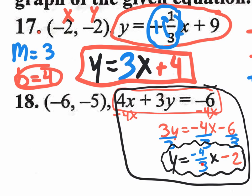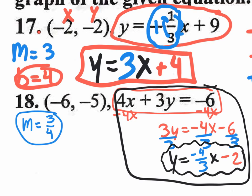The slope of the given line is -4/3. Our line is perpendicular to it, so we need the opposite reciprocal slope — change the sign and flip the fraction. Negative 4/3 becomes positive 3/4. Once you find that slope, you no longer need the original equation. We got what we needed: slope = 3/4.